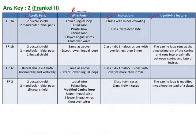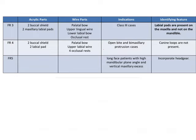Usually in an image-based question, FR 4 and FR 5 are never asked. They usually only ask two indications of FR 4 and 5. As an image-based question, they will stick to either FR 1, FR 2, or FR 3. So how will you identify between these three?